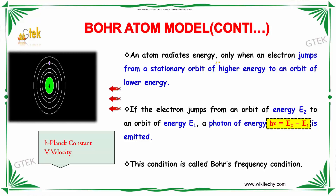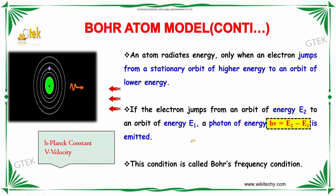An atom radiates energy when an electron jumps from a stationary orbit of higher energy to an orbit of lower energy. If the electron jumps from an orbit of energy E2 to an orbit of energy E1, a photon of energy h nu is equal to E2 minus E1 is emitted. This condition is called Bohr's frequency condition. Here h is Planck's constant and v is the velocity of the electron.